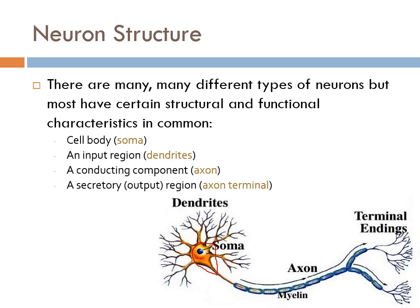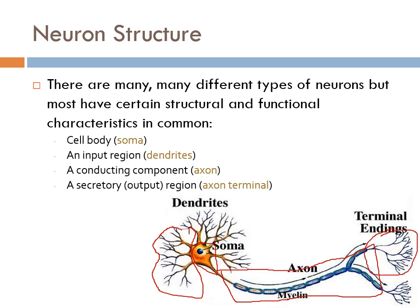The next part are the dendrites, which are all these little branchy tree-looking things. These dendrites are the input region. Coming out of the cell body going to the end of the neuron is the axon, and then finally the last part are the axon terminals — the portions where they communicate with the dendrites of the next neuron.